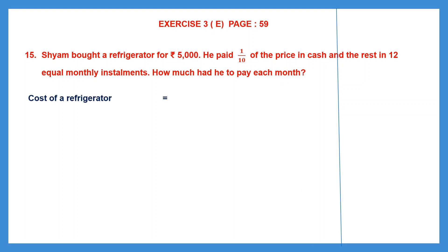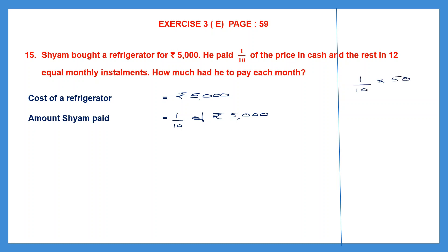The cost of the refrigerator is 5000 rupees. The amount Shyam paid in cash is one tenth of 5000 rupees. One tenth of 5000 means 1/10 multiplied by 5000/1. We can cancel a zero from the denominator and a zero from the numerator, giving 1 × 500 = 500, and denominator 1 × 1 = 1. So 500 by 1 is 500 rupees — the amount Shyam paid in the beginning.